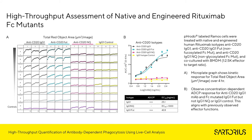Next, we investigated native and engineered rituximab Fc mutants. Frodo-labeled Ramos cells were treated with native and engineered human rituximab isotypes: anti-CD20-IgG1, anti-CD20-IgG1-GASDALIE (a non-fucosylated Fc mutant), and anti-CD20-IgG1-NQ (a non-glycosylated Fc mutant), then co-cultured with bone marrow-derived macrophages at a 1-to-2,500 effector-to-target ratio. The microplate kinetic graph shows total red object area over four hours. We observed concentration-dependent ADCP for anti-CD20-IgG1 and the Fc-mutated IgG1-GASDALIE, but not for IgG1-NQ or IgG control. EC50 values are shown in the table, and these results align with previously observed effector functions.